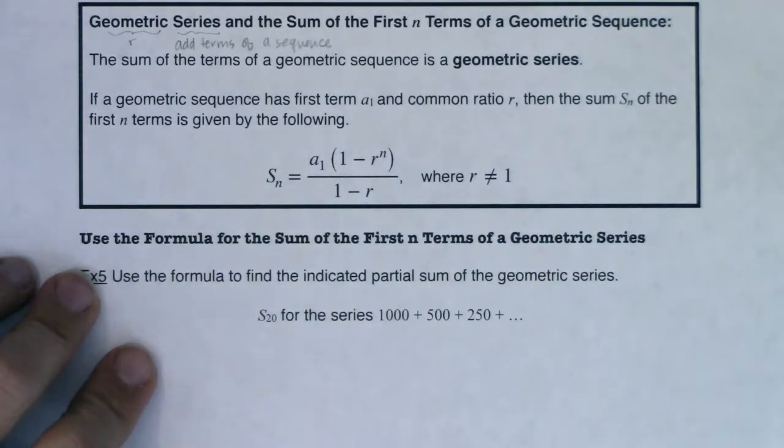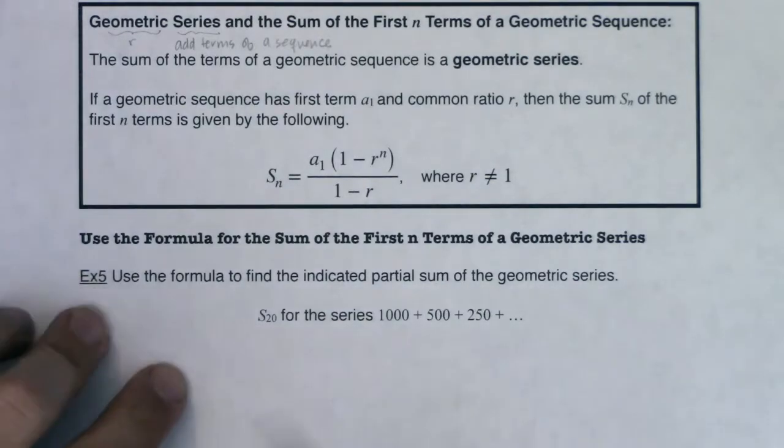We can't have that equilibrium happening. All right, so with that, let's take a look. It says use the formula for the sum of the first n terms of a geometric series. All right, and let's go ahead and use this formula to find the indicated partial sum of the geometric series.